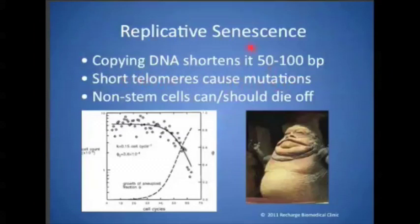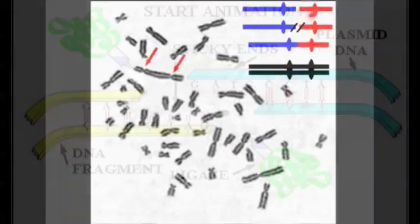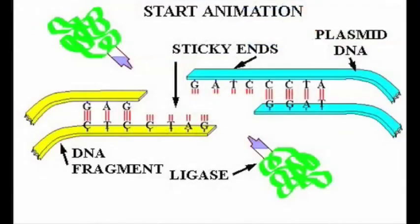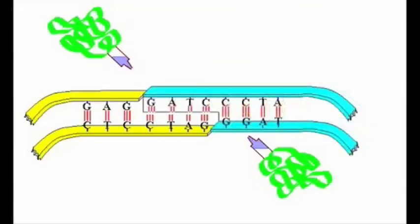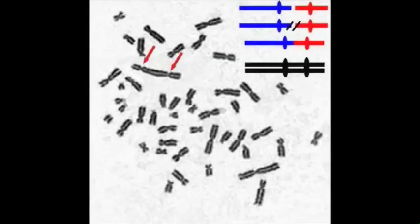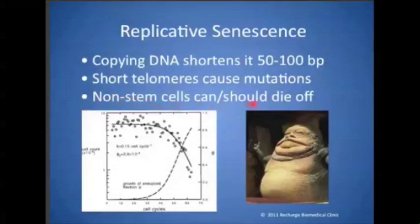Telomere shortening causes mutations. When the ends are too short, they are recognized as a DNA cut — damage. The very diligent repair mechanisms of the cell kick in, and when they see a cut, they splice the ends together. When you splice two ends together, you get a double chromosome, which will not segregate properly.